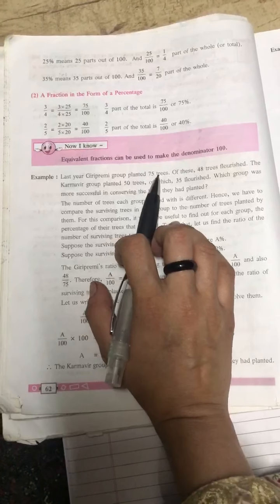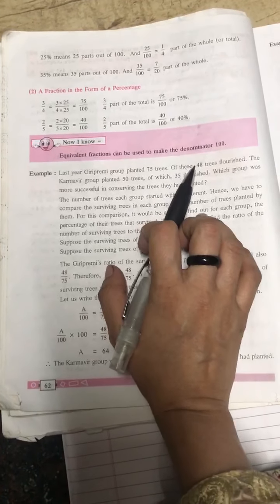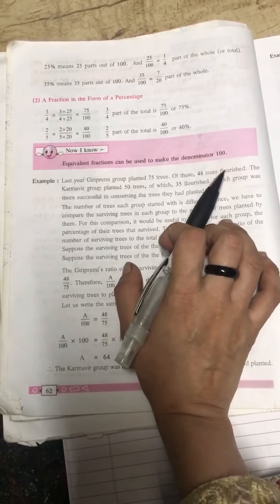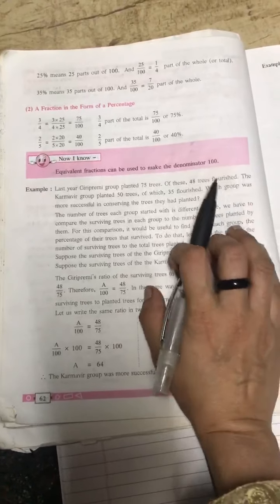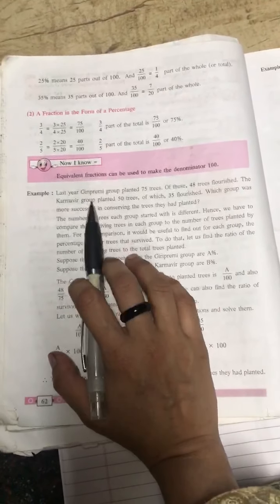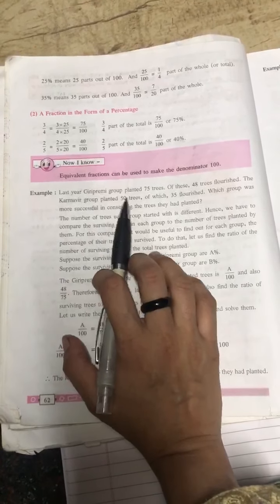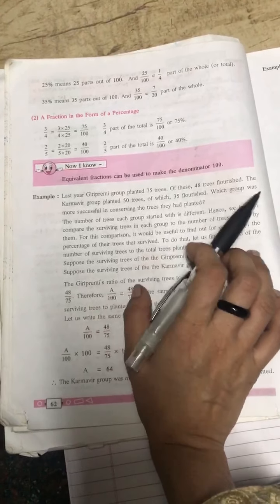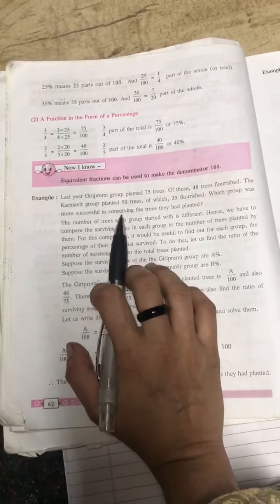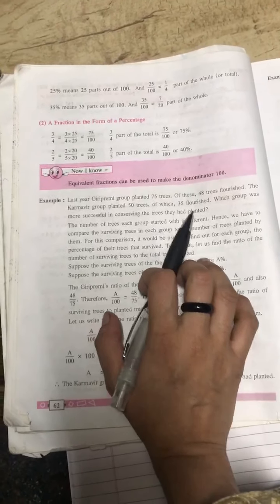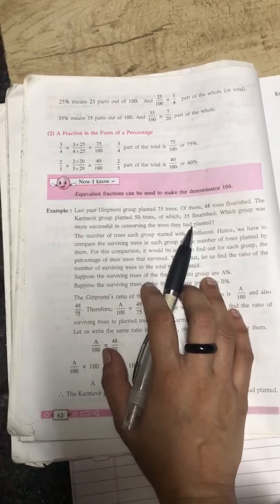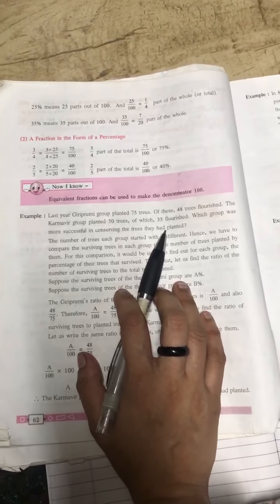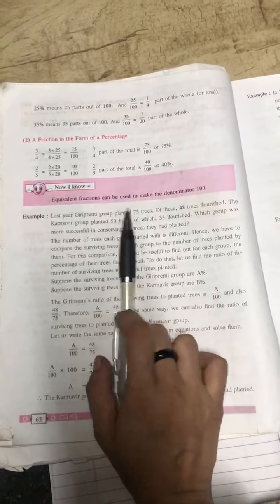See, last year Giri Preemi group planted 75 trees, of this 48 trees flourished. That means flourished means fought. The Karamvir group planted 50 trees, of which 35 flourished. Which group was more successful in conserving the trees that had planted? Now there are two groups, one is Giri Preemi and one is Karamvir.